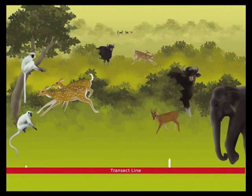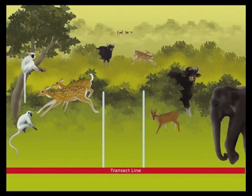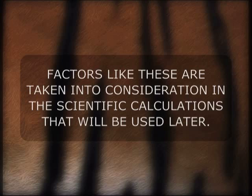In line transect sampling, all animals that are on the line or immediately adjacent to it are detected. But as the distance increases from the transect line, the detectability of animals gets reduced due to vegetation or because animals often blend in with the background. Factors like these are taken into consideration in the scientific calculations that will be used later.